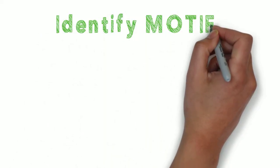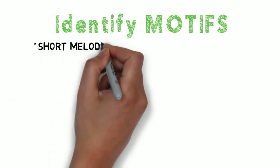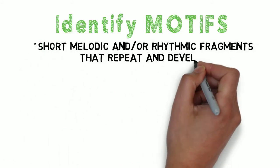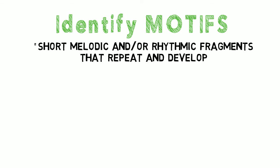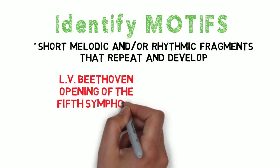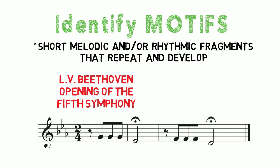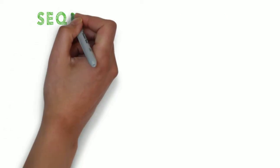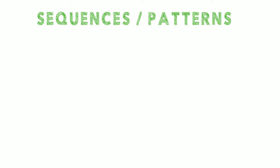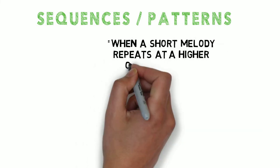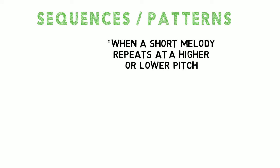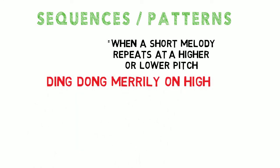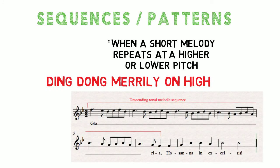You could also identify motifs — these are short melodic or rhythmic fragments that repeat and develop. Perhaps the best example of a melodic motif is the opening of Beethoven's Fifth Symphony. There could also be sequences or patterns — that's when a motive or short melody repeats at a higher or lower pitch. For example, the Christmas carol Ding Dong Merrily on High has a descending melodic sequence.